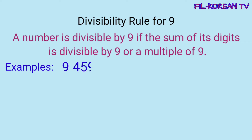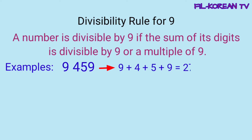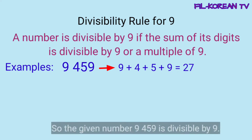Examples, 9,459. I-plus natin yung lahat ng digits. 9 plus 4 plus 5 plus 9 equals 27. Itong 27 ay multiple ng 9. So, divisible ito ng 9. Kaya yung given number na 9,459 ay divisible ng 9.